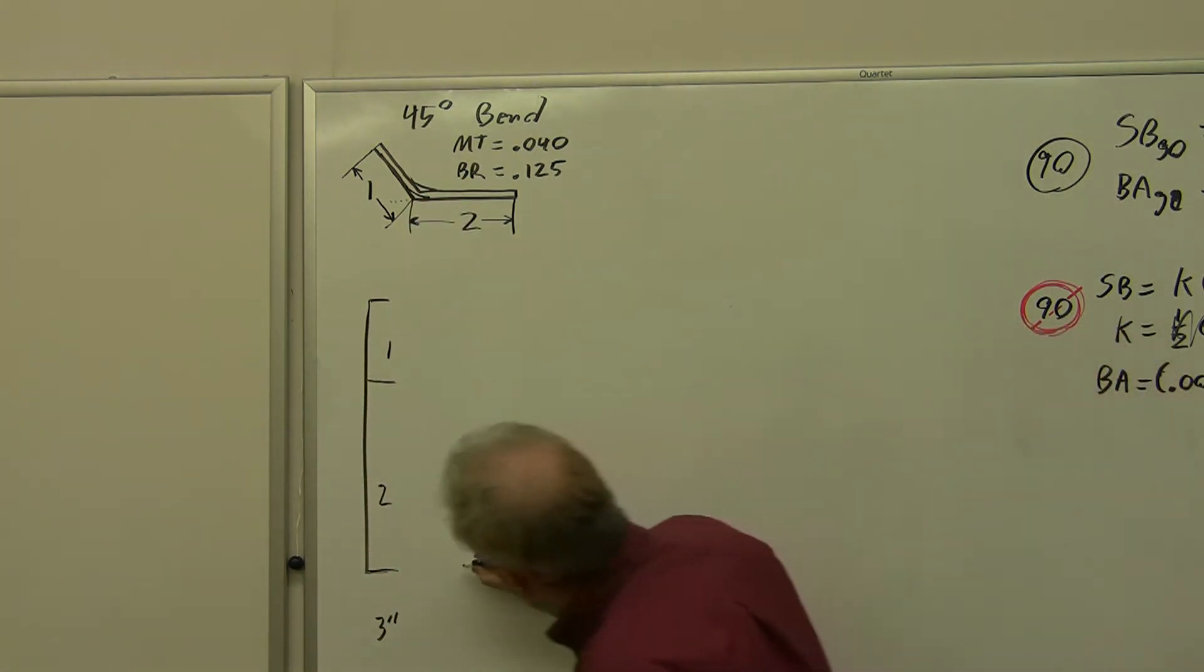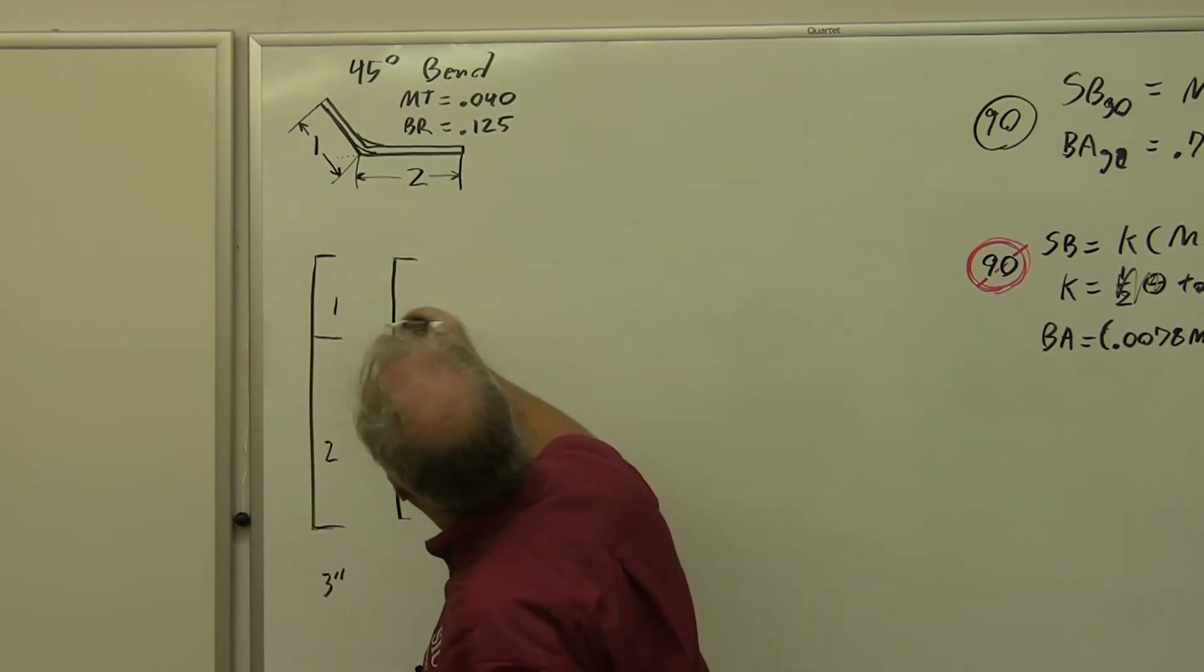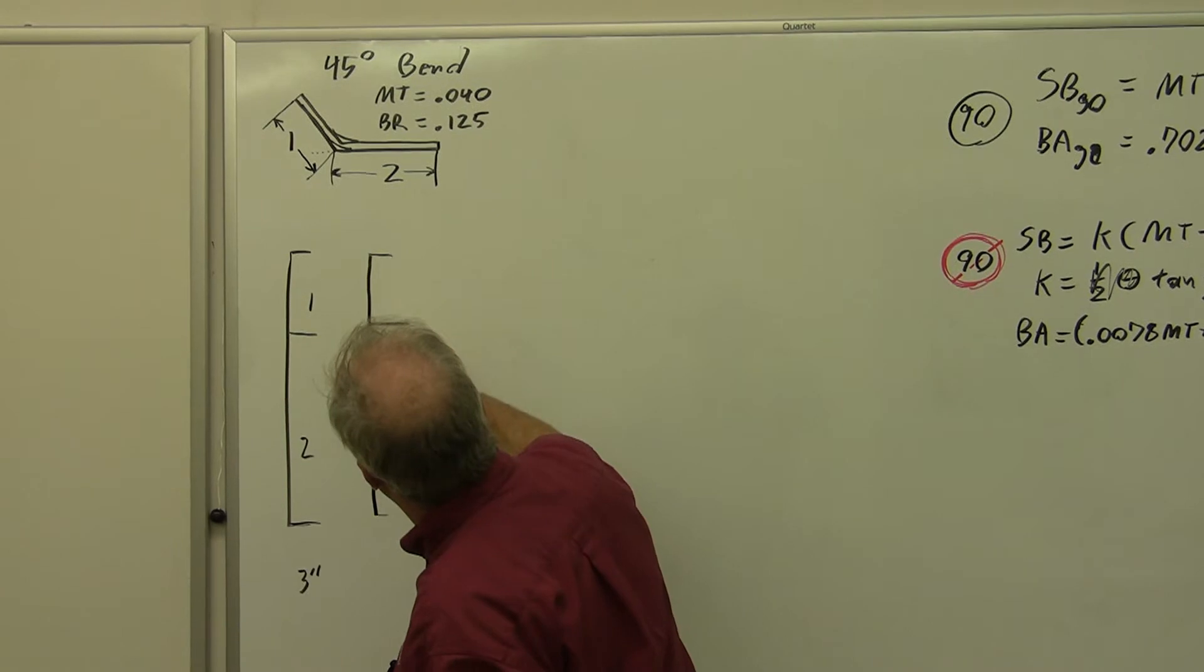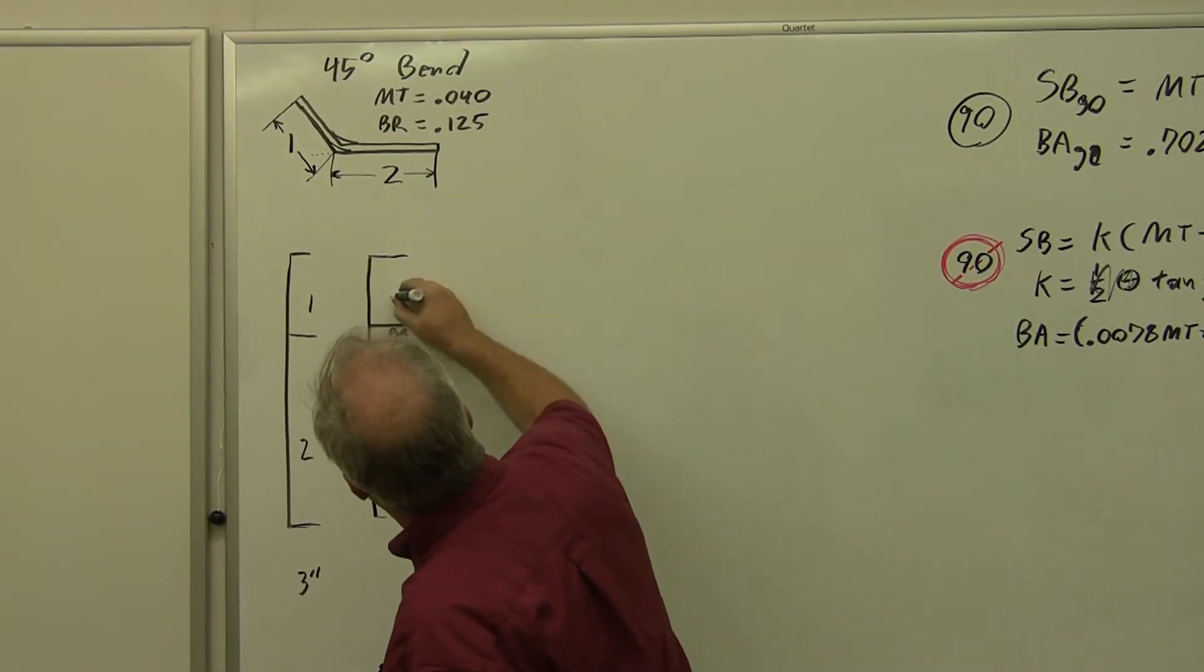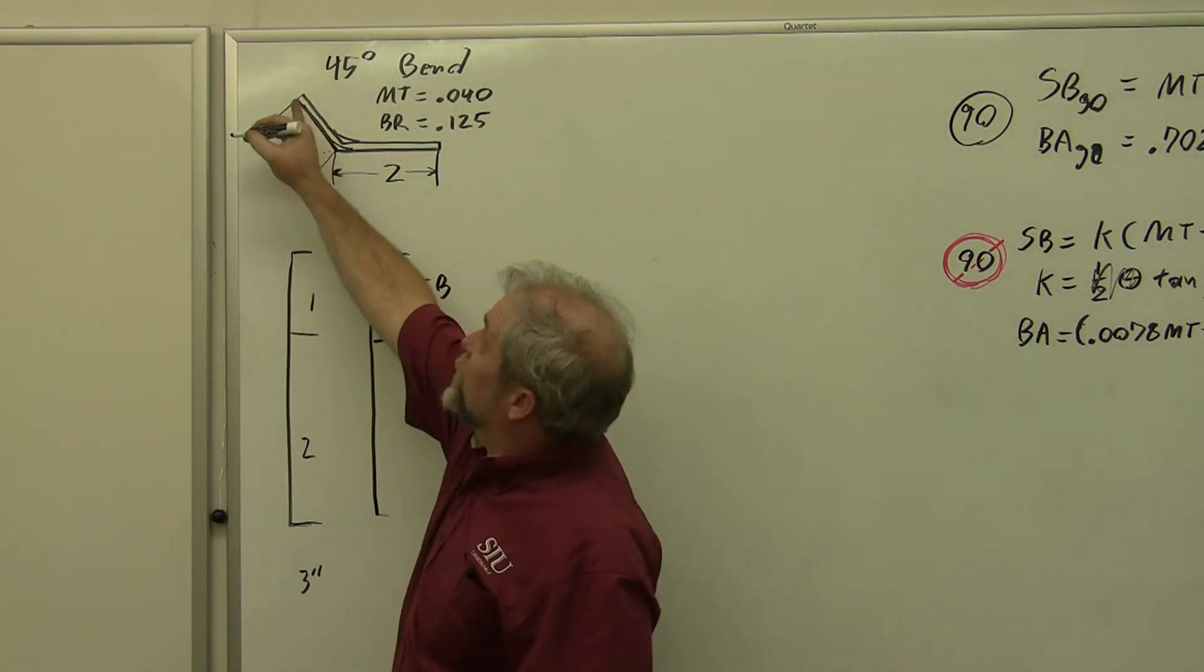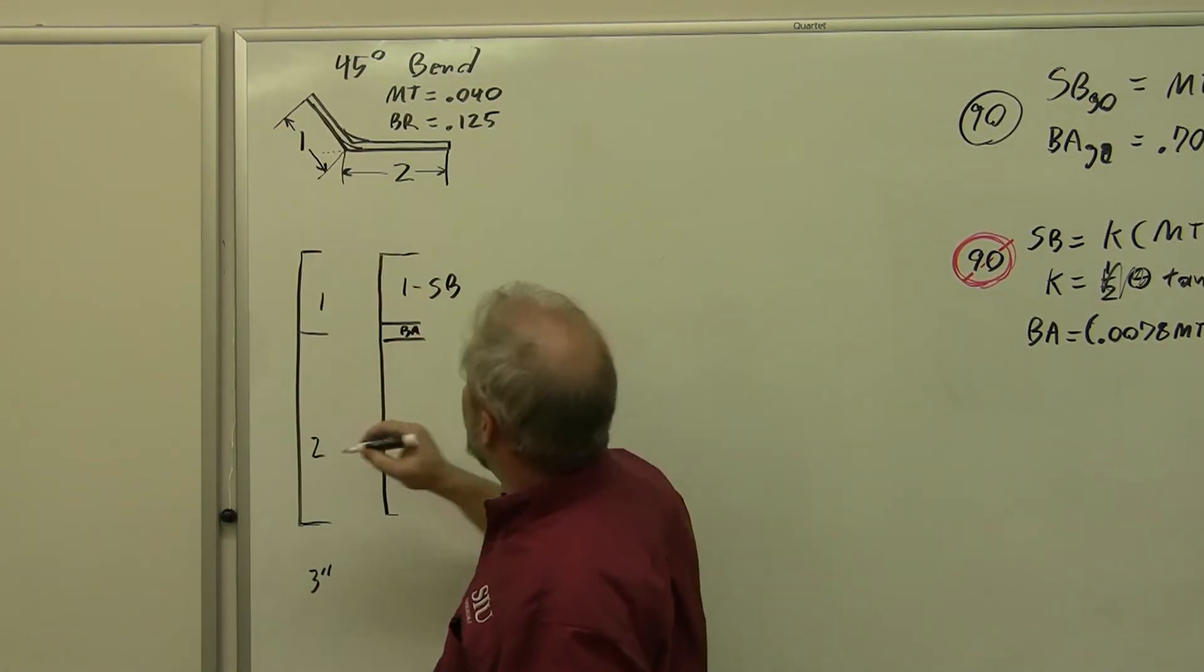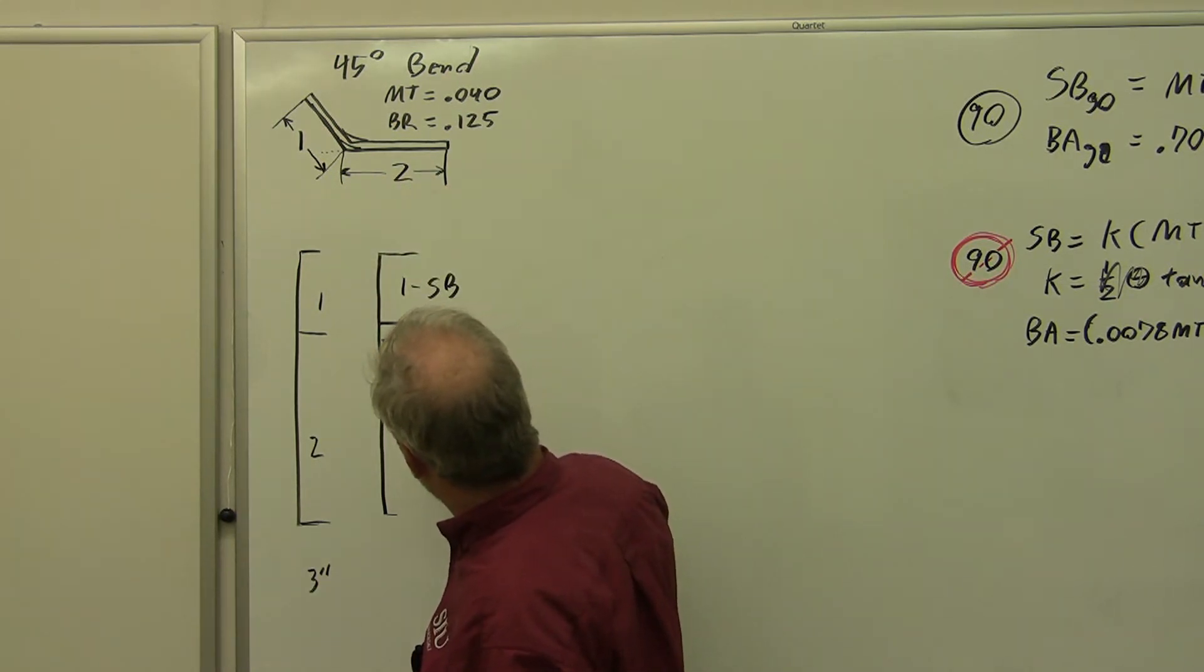But rounding this corner is what we have to do. And so our actual layout is going to look something like this, to be a little bit shorter. We're going to have two bend tangent lines with a bend allowance in the center. This is going to be one minus our setback. Only one setback because it terminates on the edge. This flat is two inches minus a setback.